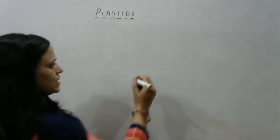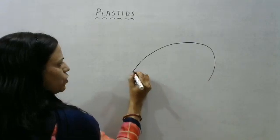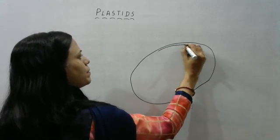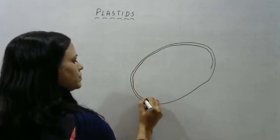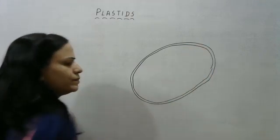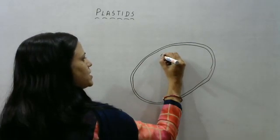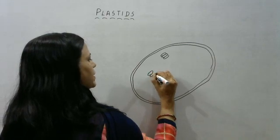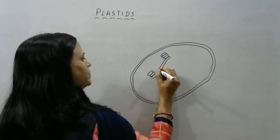Let us now draw the structure of a chloroplast. A chloroplast is somewhat like mitochondria in its basic nature — it is also a double-membraned cell organelle. There are two membranes: the inner membrane and the outer membrane present in the chloroplast. Inside this cell organelle we have structures that are stacks, drawn at some gaps from each other, and at some places these stacks are interconnected.